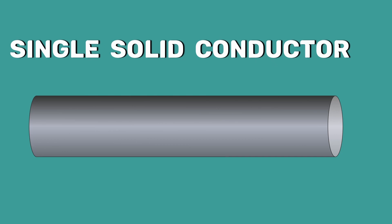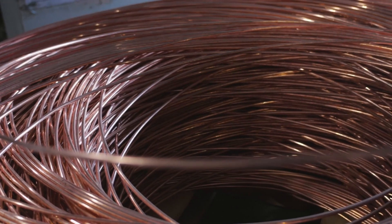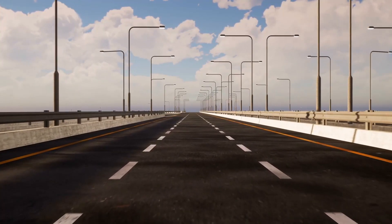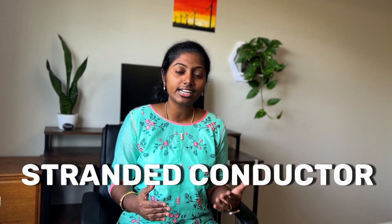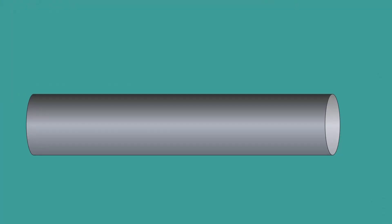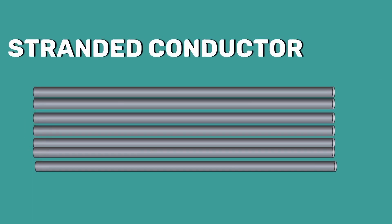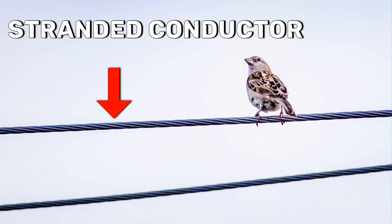If we are using a single solid conductor, then it is very difficult to coil the conductor — it will not be flexible. The problem comes when we need to transport a lengthy solid conductor over a long distance. Therefore, instead of a solid conductor, a stranded conductor is used. Here, instead of a single solid conductor, several thin wires called strands are twisted together.